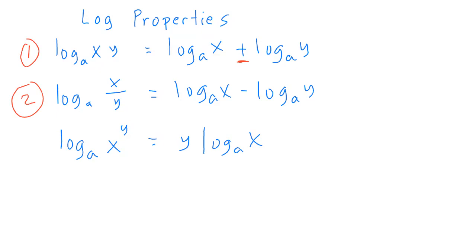The second one is the quotient property or quotient rule. That's log with base a of x divided by y, which is equal to log base a of x minus log base a of y. We have a minus here since we're dividing — when you multiply you're adding, and when you divide you subtract.